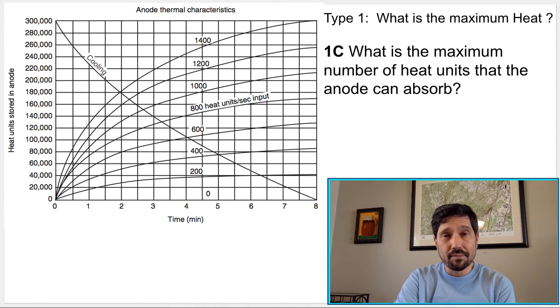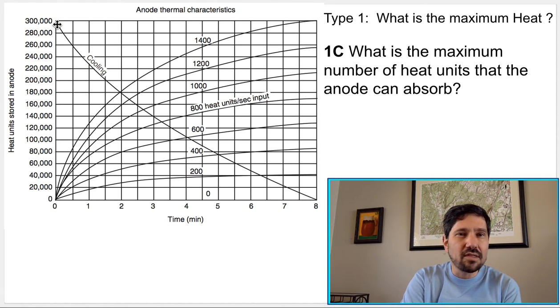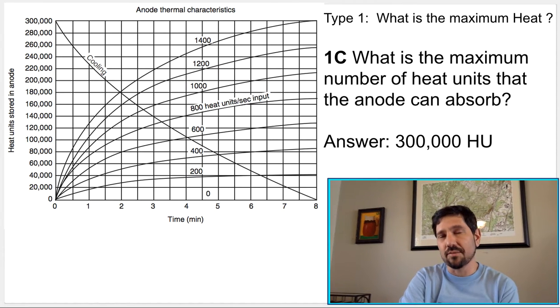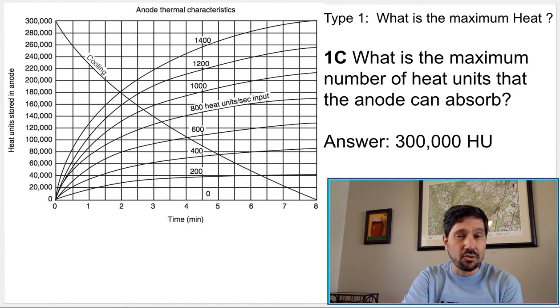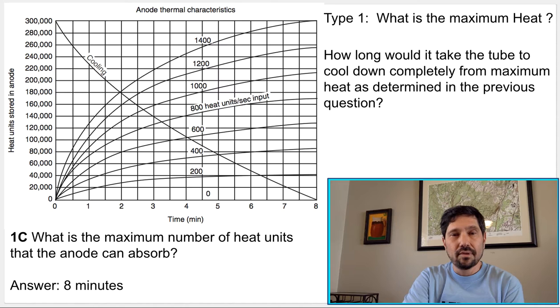Here's another one with a lot more clutter. Actually, most of these lines you don't need for this problem. We mainly see this cooling curve here. It's asking what's the maximum heat that the anode can absorb? I see anode up here, I see my cooling curve. I ignore all these other lines, extraneous information, distractors, and we would see 300,000 is what it can absorb. And how long would it take to cool off? Eight minutes. Eight minutes to be completely cooled off.